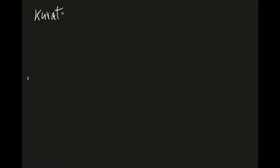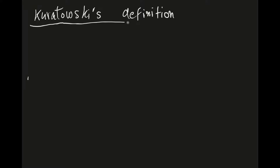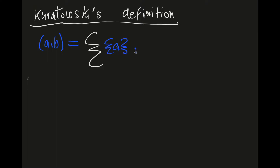So Kuratowski's definition is what most undergraduates learn today, and it's the definition that we use to define ordered pairs. Kuratowski defined the ordered pair (a, b) by the following set.